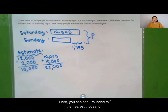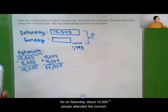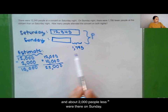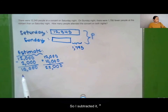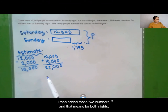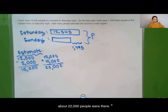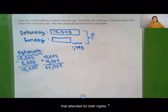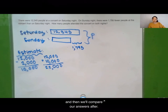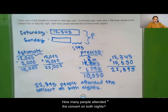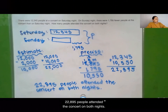I rounded to the nearest thousand. So on Saturday, about 12,000 people attended the concert, and about 2,000 fewer people were there on Sunday, which means about 10,000 people were in attendance on Sunday. Adding those two numbers, about 22,000 people attended for both nights. Now pause the video to calculate the exact number of people that attended both nights. 22,895 people attended the concert on both nights.